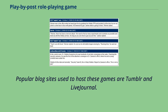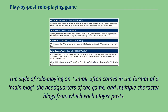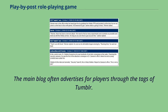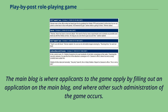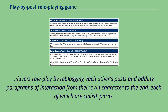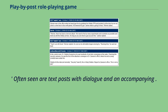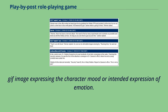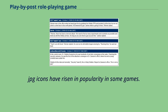Popular blog sites used to host these games are Tumblr and LiveJournal. The style of role-playing on Tumblr often comes in the format of a main blog — the headquarters of the game — and multiple character blogs from which each player posts. The main blog often advertises for players through the tags of Tumblr, and is where applicants apply by filling out an application, and where other administration of the game occurs. The role-play game creator is often referred to as the admin, short for administrator, and players may be required to run major plots and game changes by the admin before proceeding, making the admin function in a way that a traditional GM might have. Players role-play by reblogging each other's posts and adding paragraphs of interaction from their own character, each of which are called paras. Often seen are text posts with dialogue and an accompanying GIF image expressing the character mood or intended expression of emotion, though recently JPG icons have risen in popularity in some games.